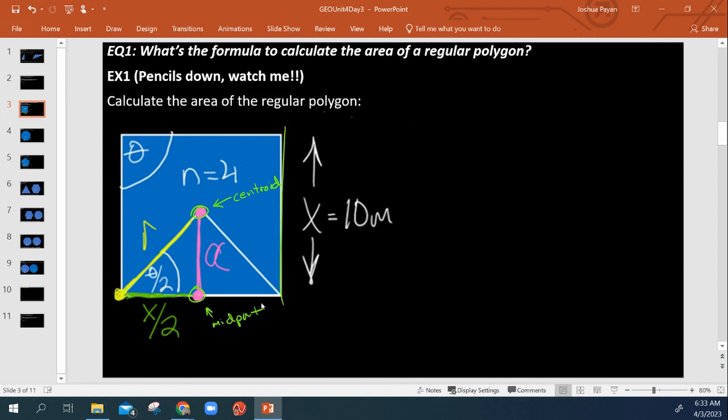So if we know that the full side length is 10, that means this x over 2 here is 5 meters. And we know it's a regular quadrilateral because if we just do the formula for theta regular, so the interior sum,